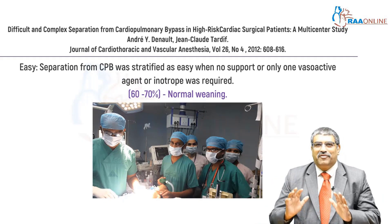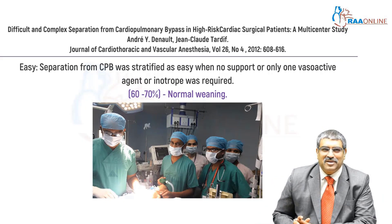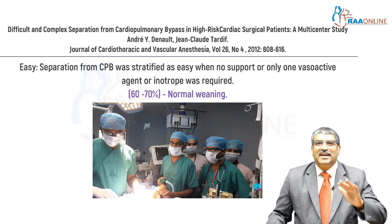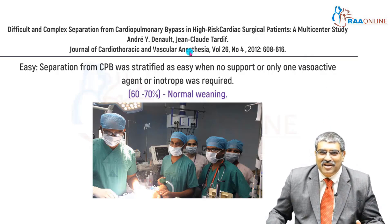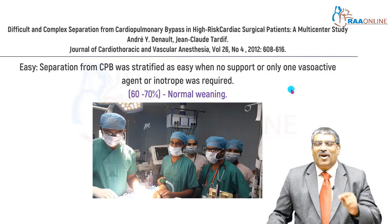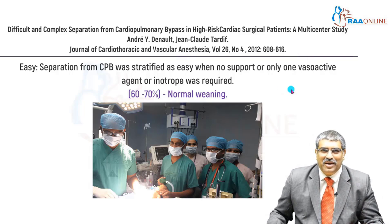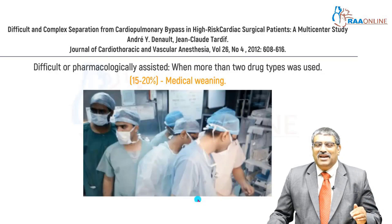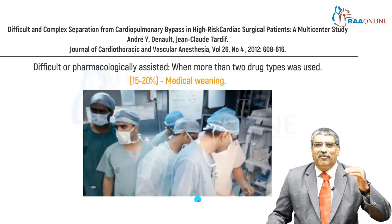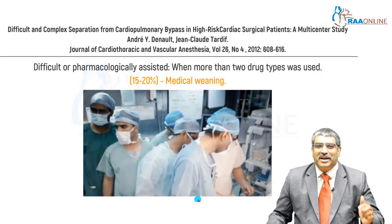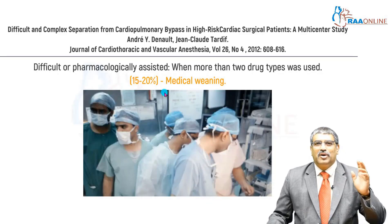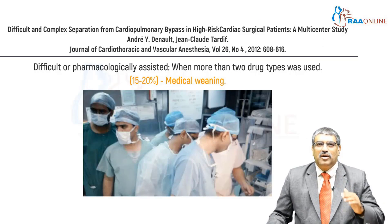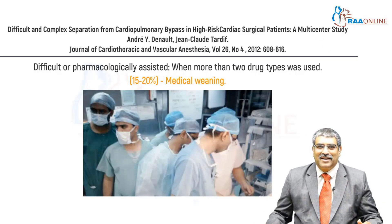There are three different types of weaning from cardiopulmonary bypass. Fortunately, 60 to 70 percent is easy weaning, where no support or only one vasoactive agent is required. Next comes difficult or pharmacological-assisted weaning, which forms about 20 percent of cases, where more than two inotropic agents are required.